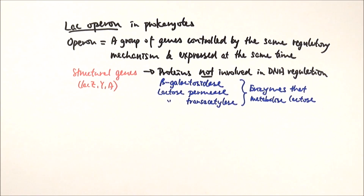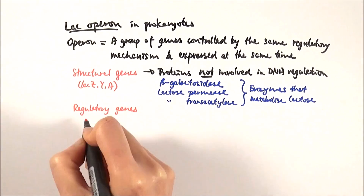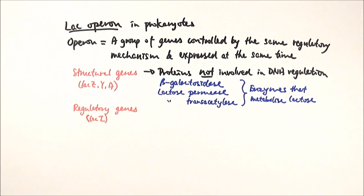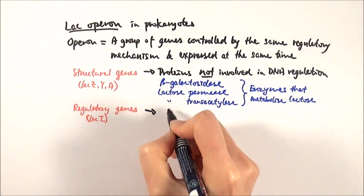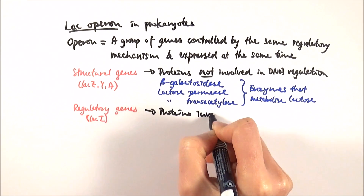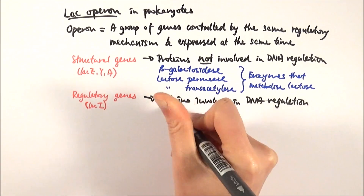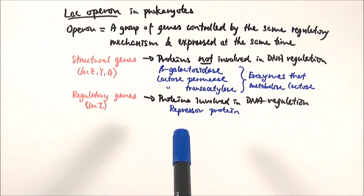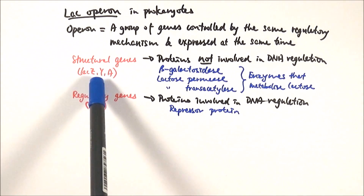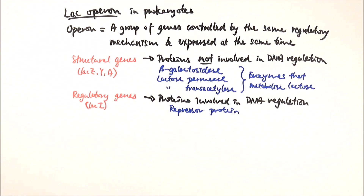Apart from structural genes, we also have regulatory genes. In the case of the LAC operon, this is LAC-I. In comparison to structural genes, regulatory genes code for proteins that are involved in DNA regulation. So in the LAC operon, the LAC-I gene codes for the repressor protein. As the name implies, the repressor protein will repress or stop the transcription of the three structural genes, preventing production of the lactose-metabolizing enzymes.